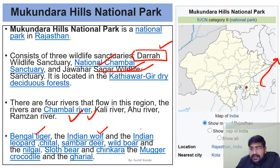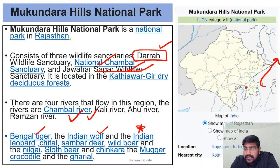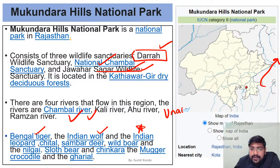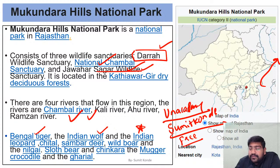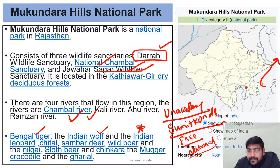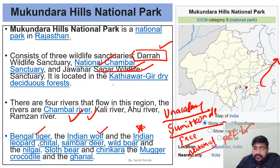Mukundra Hills is located in Kathiawar-Gir dry deciduous forest type. The Chambal River is the most important river flowing here, and key species include Bengal tiger, Indian wolf, and Indian leopard. If you want the PDF for this series, go to the Unacademy app, type 'Sumeet Konde', and you will find the entire national park series — about eight to nine lectures — with free classes and downloadable PDFs.